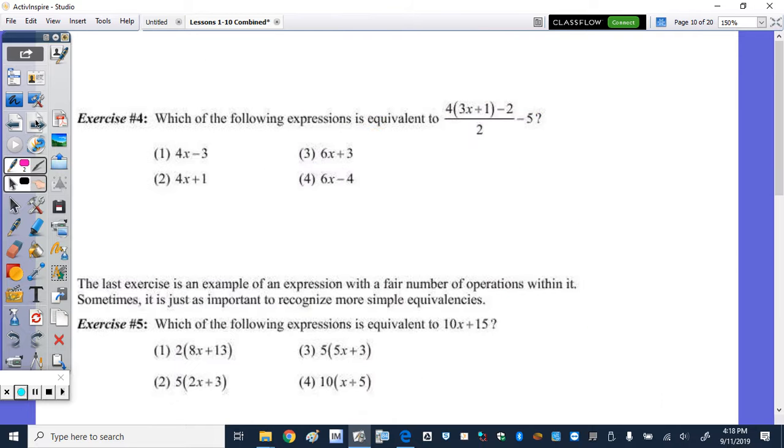Exercise number 4. Which of the following expressions is equivalent to that expression? There's a lot going on there. You want to start by simplifying your numerator. And then we can divide by 2. So within that we're going to have to distribute. So 4 times 3x is 12x. 4 times 1, keep your sign, is 4. Then minus 2, divide by 2.